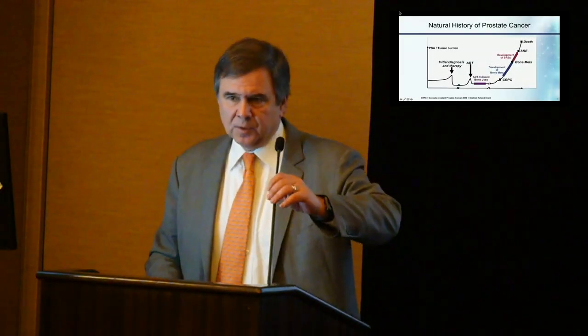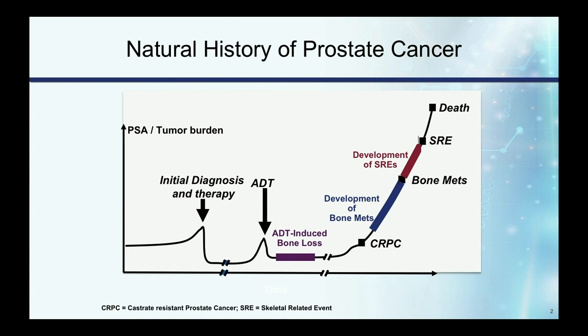This talk is about castrate resistant prostate cancer, though these concepts are going to change as we move some treatments up front and earlier. In the past, patients initially came in with high disease burden with metastatic disease. They were put on androgen deprivation therapy, which caused bone mineral density loss and skeletal events. After about 18 to 24 months on average, these patients became castrate resistant and developed other issues including skeletal related events.